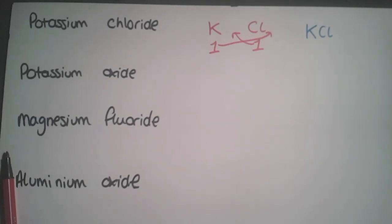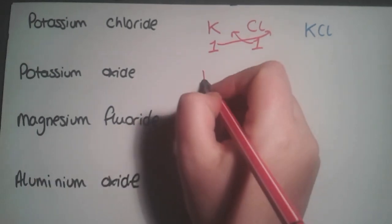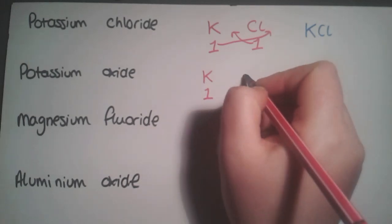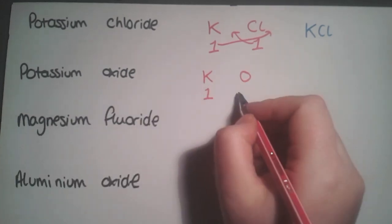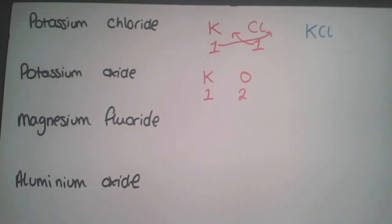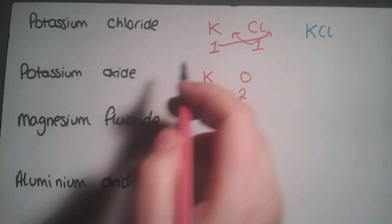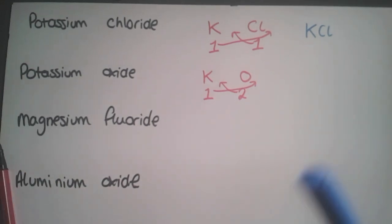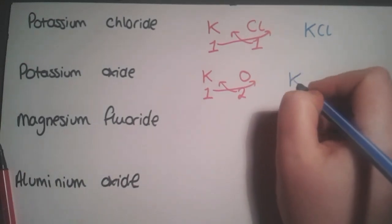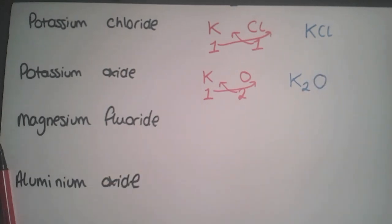Our next example is potassium oxide. Again we have K with valency one, and this time oxygen which is O. It's in group six with valency two, as it needs two electrons to fill its outer shell. When we swap them over, the two sits with our potassium, giving K2O, again missing the one for oxygen.